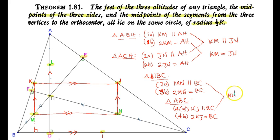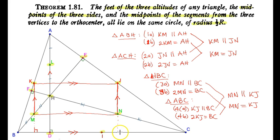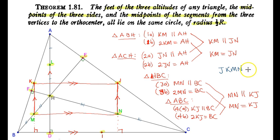Combining 4A and 3A: MN is parallel to KJ. And combining 3B and 4B: MN = KJ. So far we have KM and JN perpendicular to BC, parallel to each other, and equal in length. Also, KJ and MN are parallel, equal in size, and perpendicular to AD. Since AD and BC are perpendicular, the conclusion is that JKMN is a rectangle.